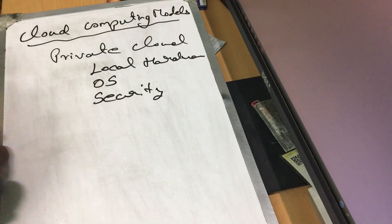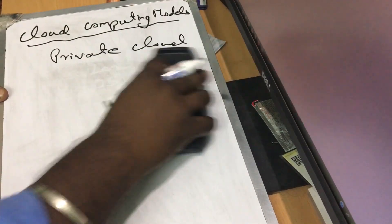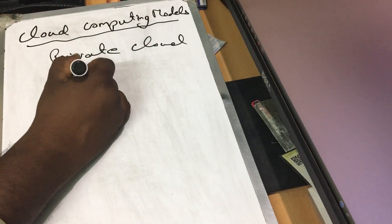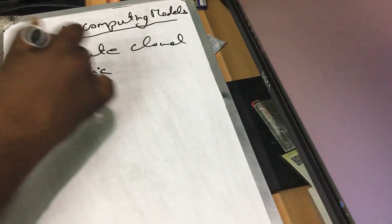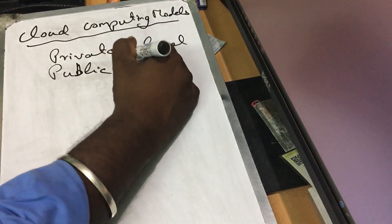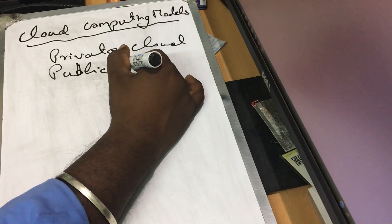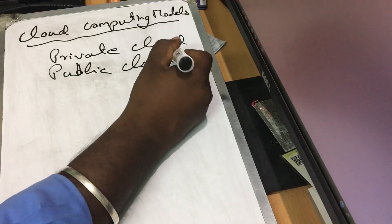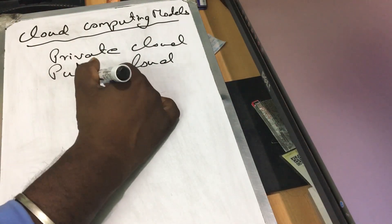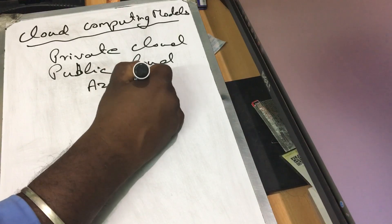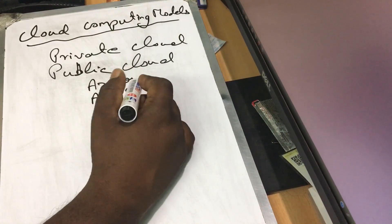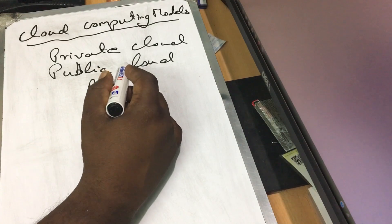So that's private cloud. Now, public cloud — examples are Azure and AWS. Amazon AWS cloud is a public cloud.